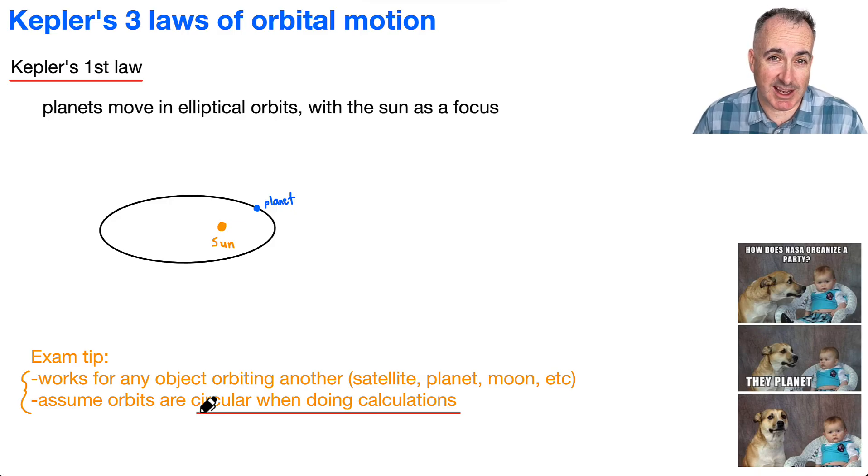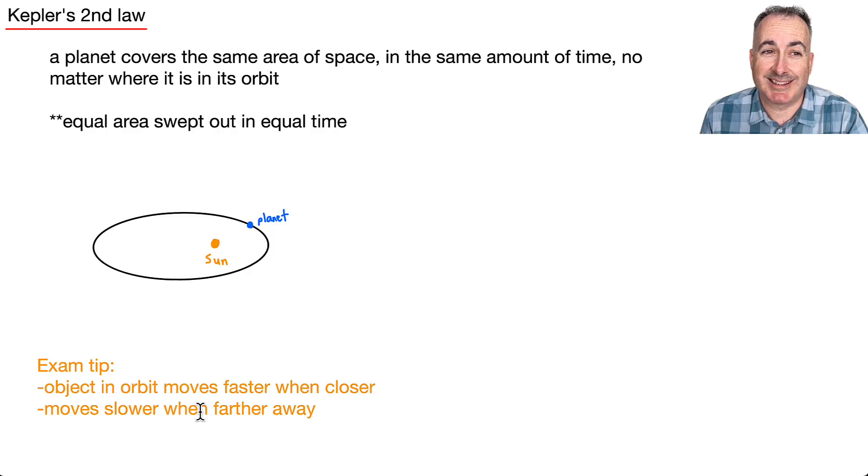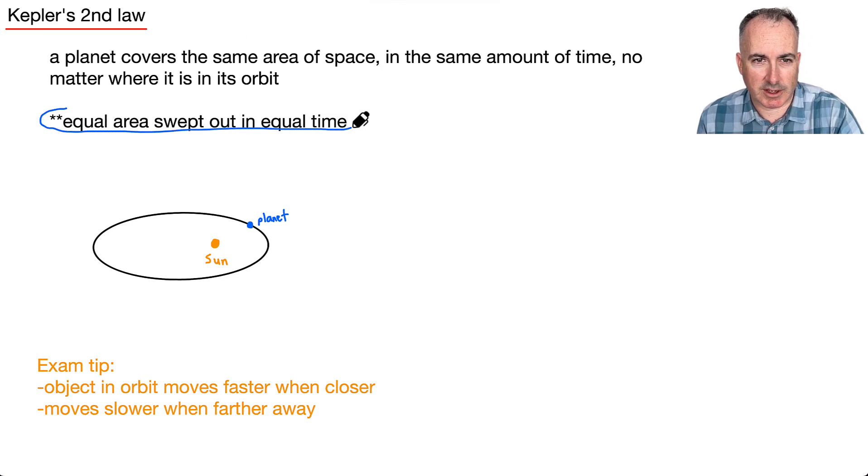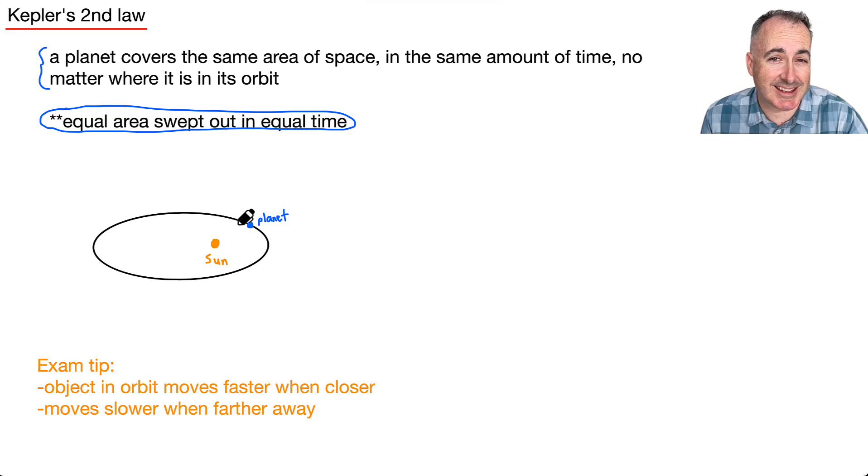Let's do Kepler's second law. Kepler's second law is all about a planet that's covering, so it has to do with the speed. This is what we were looking at before. The important thing is this piece right here. A planet covers the same area of space in the same amount of time, no matter where it is in its orbit.